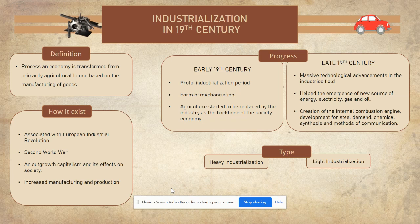Industrialization in the 19th century is the main focus of this topic, because the Industrial Revolution took place during this time, resulting in the rise of modern industry. Industrialization is a process where an economy transforms from primarily agriculture to one based on the manufacturing of goods. It was associated with the European Industrial Revolution at the late 18th and early 19th century. The early 19th century is also known as the proto-industrialization period, where mechanization and agriculture started to be replaced by industry.